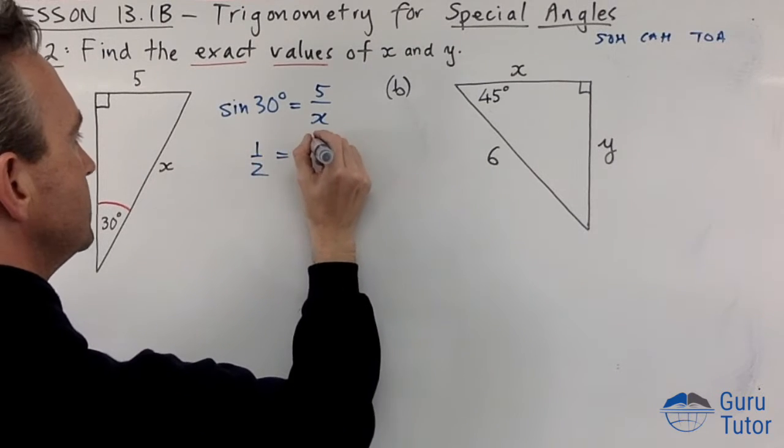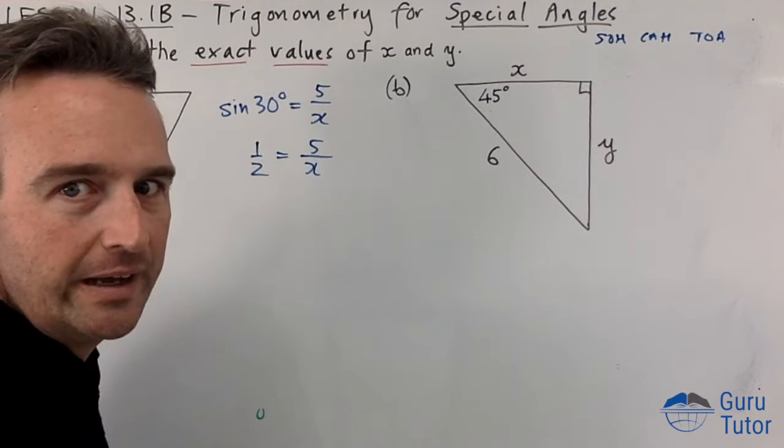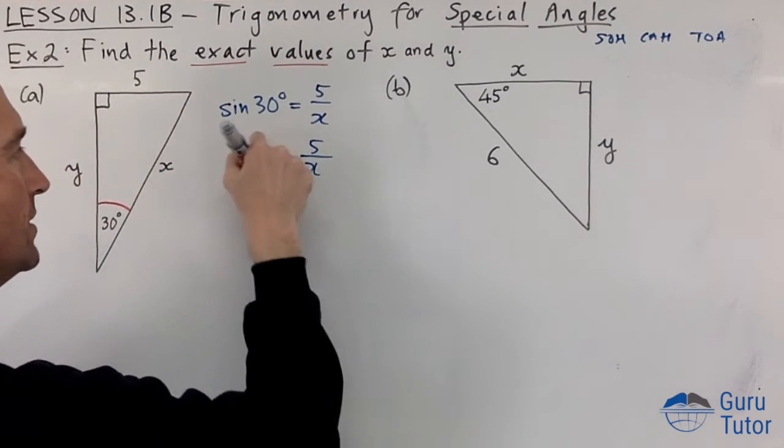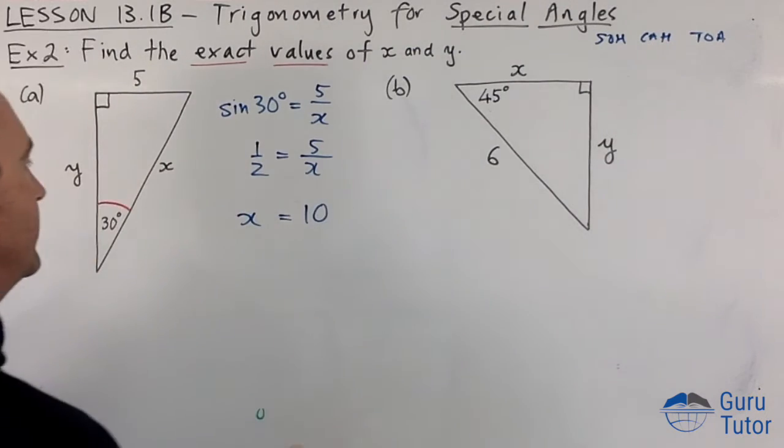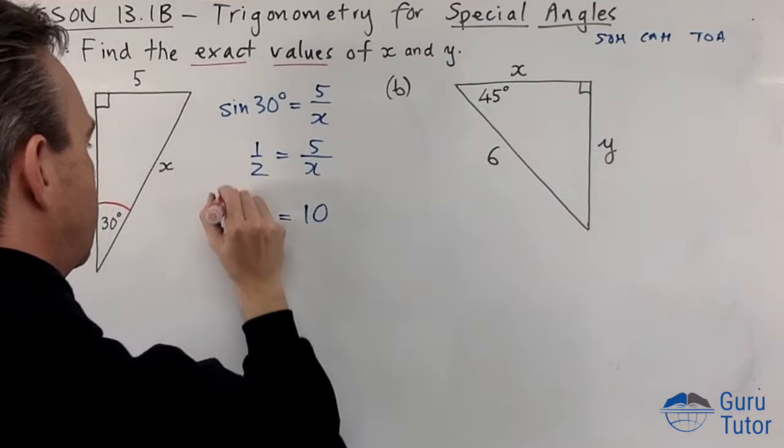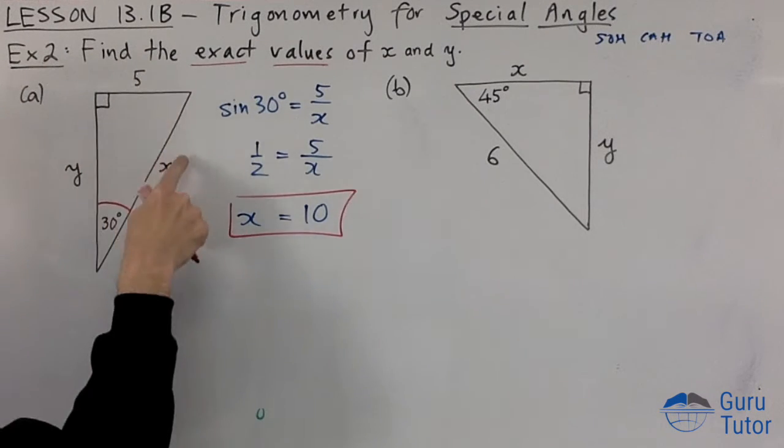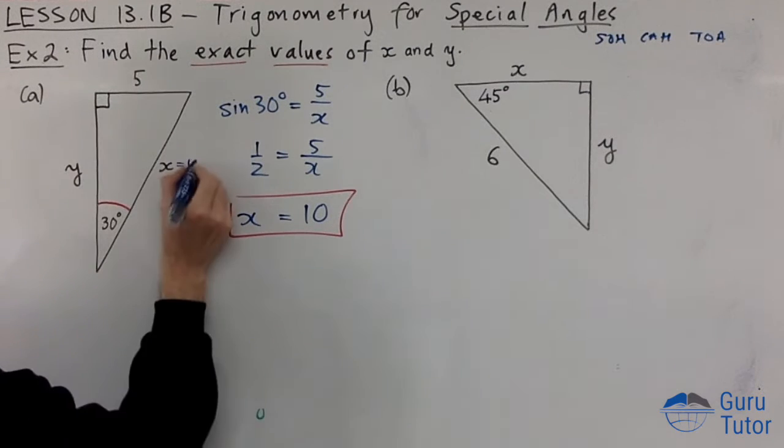Now we are just solving this proportion. How do you solve a proportion? Cross multiply. One times x is x, two times five is ten, and we have x equals 10. Does that look right? Five, x is much longer, yes that looks pretty good. So we've got x, you can write that in there.